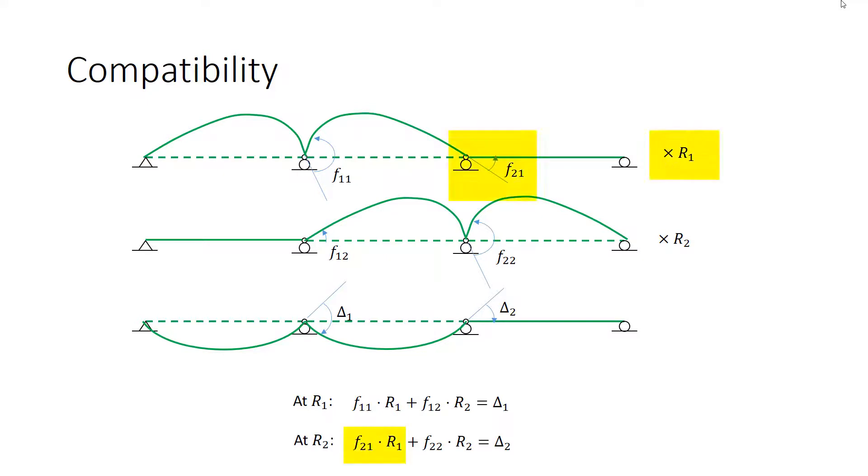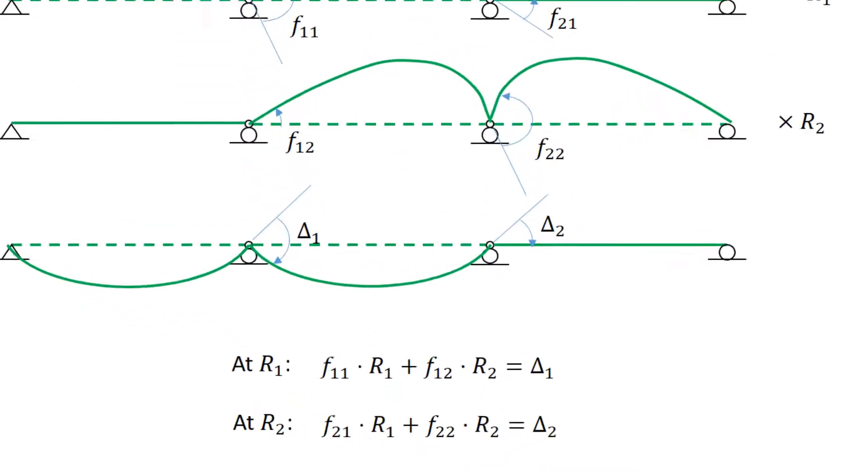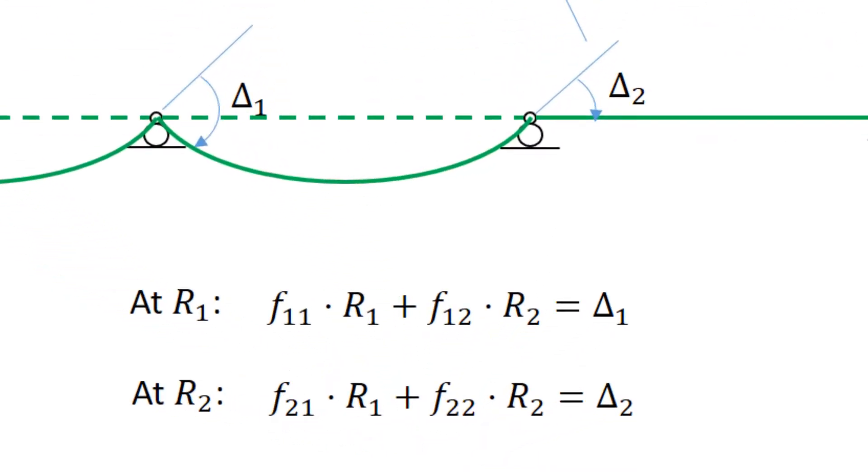At the other roller it's a similar story. We have F2-1 scaled by R1, F2-2 scaled by R2. Those added together have to equal the deformation labeled delta-2. The terms F1-1, F1-2, F2-2, F2-1, delta-1, and delta-2 all depend on known quantities, so those are all known. What's not known are the values R1 and R2. So we have here a system of equations, two equations, two unknowns. We can solve for R1 and R2. So let's proceed to that solution.